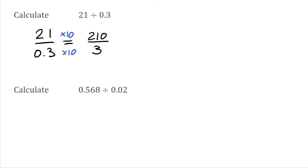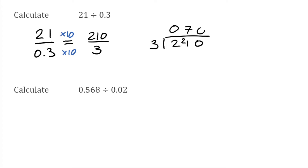That gives me the same result and they're a lot easier numbers to divide. So now we're simply going to do 210 divided by 3. 3s into 2 don't go so I'm going to carry that 2 over. Then 3s into 21 go exactly 7 times. And finally 3s into 0 are going to be 0. So our answer is actually going to be 70.